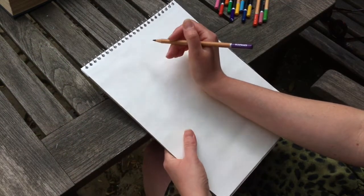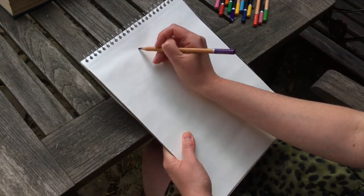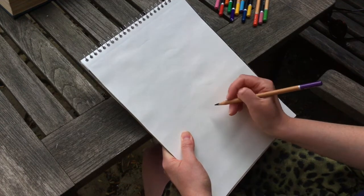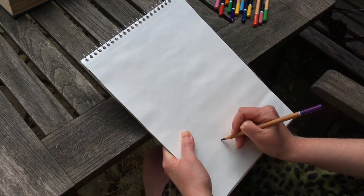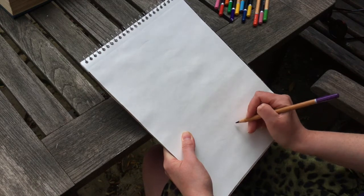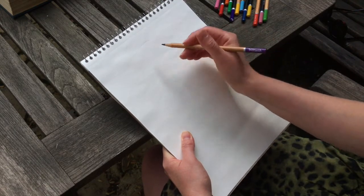So step two is then doing light marks at the top of your head and where your chin is, and that helps you get the drawing where you want it on the paper.